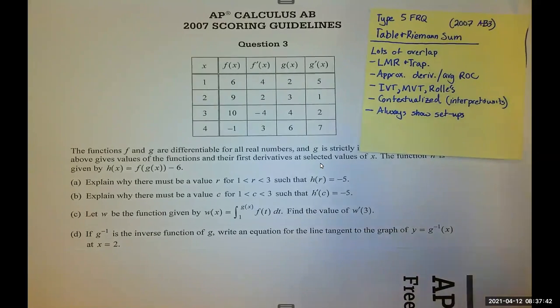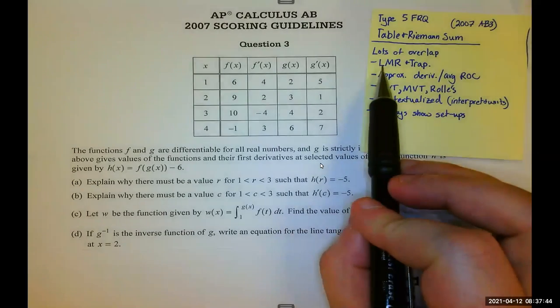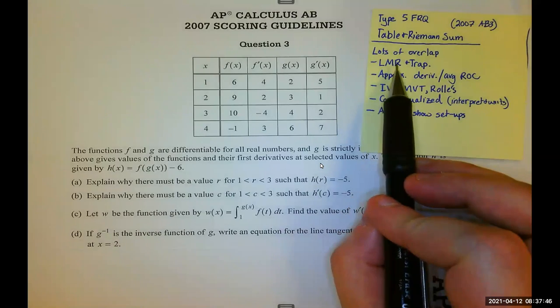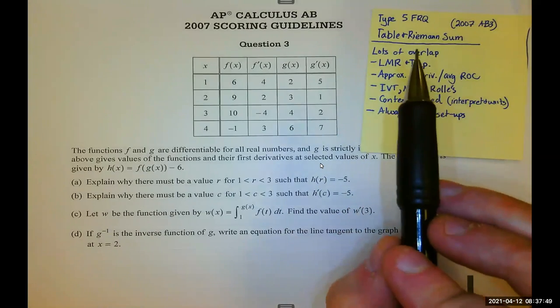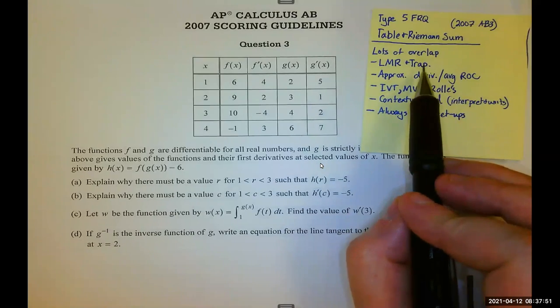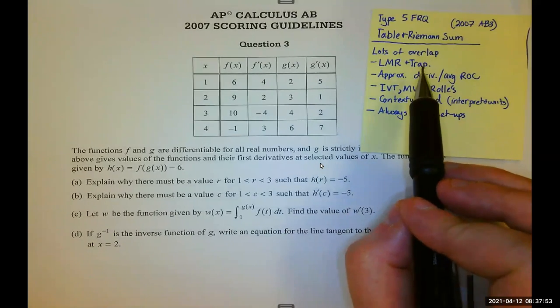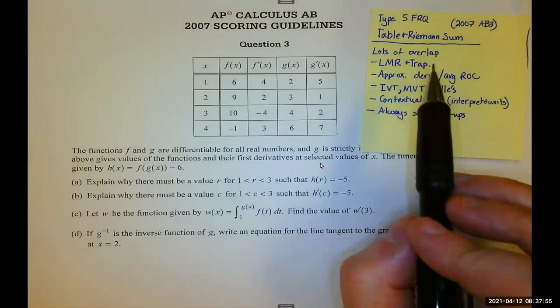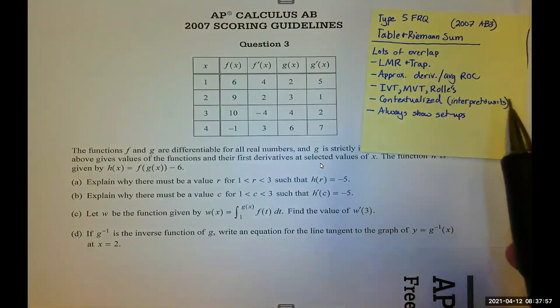When we're talking about Riemann sums, you need to be proficient with both left, midpoint, and right Riemann sums and trapezoid. Those are not Riemann sums, but they are an approximation method similar to Riemann sums.